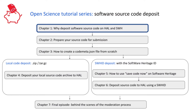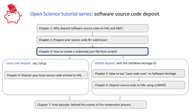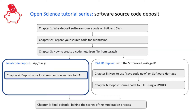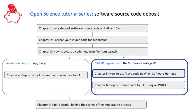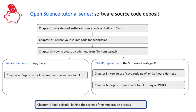First, in this chapter we'll see why deposit software in HAL and in Software Heritage. Next in chapter 2 we will discuss how to prepare the software source code following best practices from the open source software community. In chapter 3 we will discover how to create a codemeta.json file from scratch. Then we have two different methods: the local method with chapter 4, where we discover how to deposit the local sources .zip or .tar.gz file, and the second method using a Software Heritage identifier — the SWHID — when depositing in HAL. Finally, chapter 7 will go behind the scenes and see how a software source code deposit is moderated.